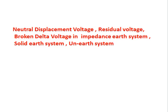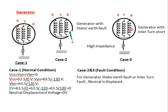Generally, one side of the generator stator windings is connected as a star and connected to earth via high impedance — this is called high impedance earthing. The other side connects to the load. In normal conditions (Case 1): Vrn + Vyn + Vbn = 0, where Vrn = 63.5∠0°V, Vyn = 63.5∠−120°V, Vbn = 63.5∠120°V. The summation of these voltages equals zero, so neutral displacement voltage equals zero.